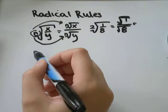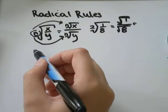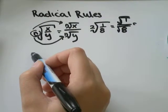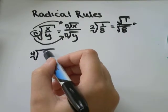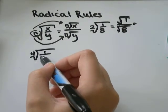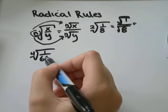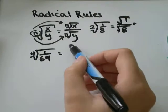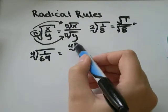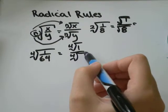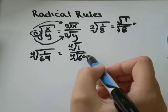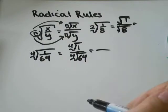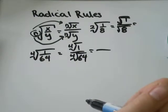Or if you had something like the 4th root of 1 over 64, that would be the 4th root of 1 over the 4th root of 64, and you could figure out what that's equal to.